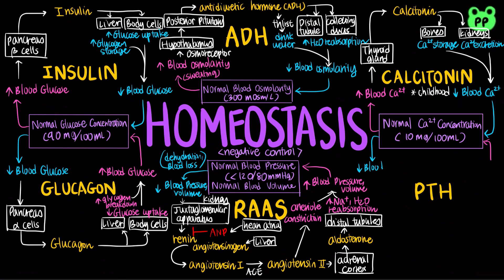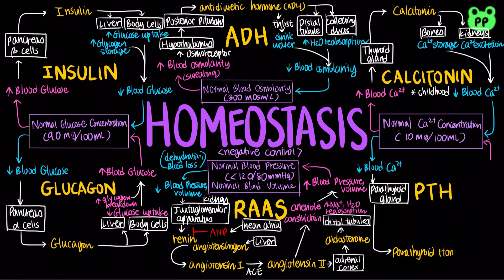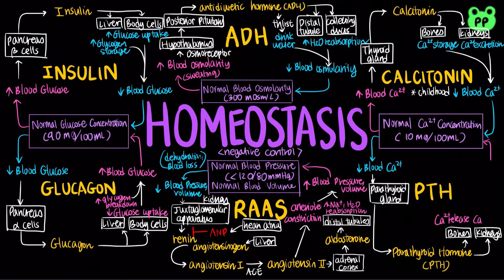On the other hand, when blood calcium level decreases, the parathyroid glands release parathyroid hormone, which stimulates calcium release from bones and calcium reabsorption in the kidneys, and also promotes activation of vitamin D. Active vitamin D in turn acts on the intestines, stimulating the uptake of calcium from food, thus increasing the blood calcium concentration to the normal value.